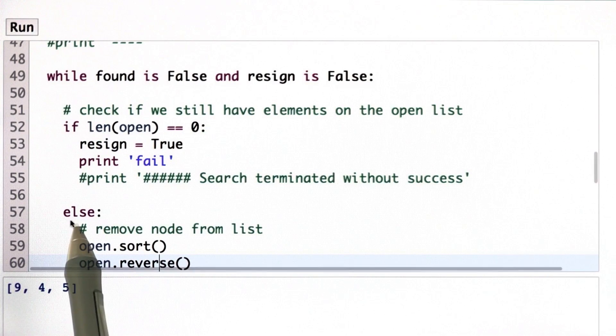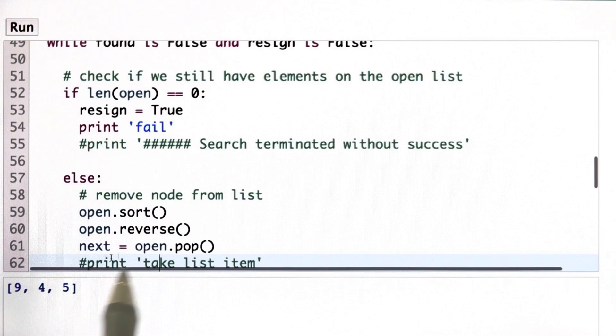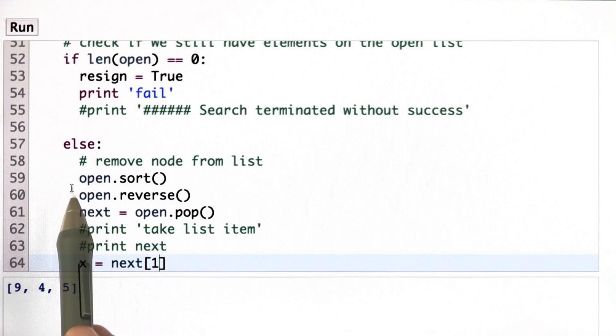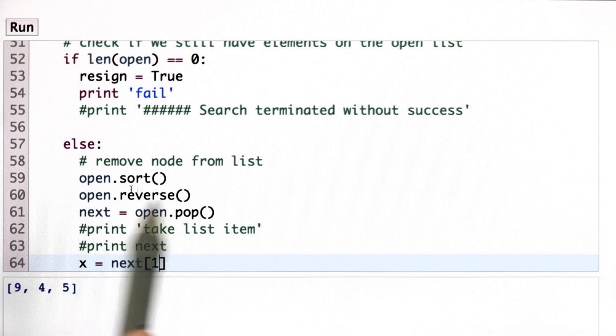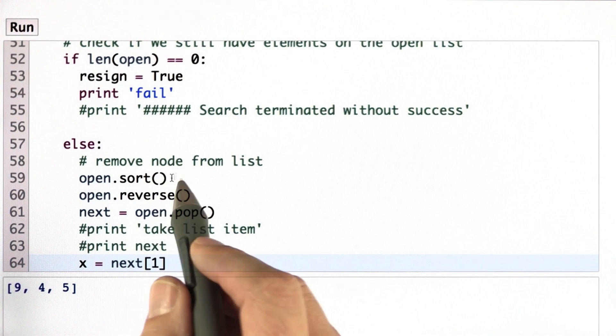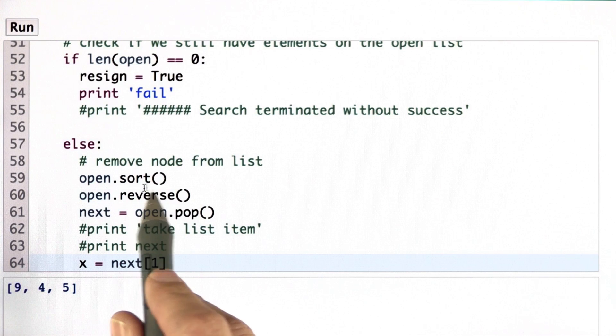If there's still elements on the open list, the else case comes into place. And here's how I remove the element with the smallest g value. I use the list sort function, which sorts elements in increasing order from the smallest g value up.